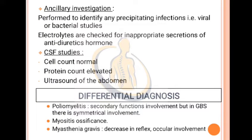Ancillary investigations are performed to identify any precipitating infections via viral or bacterial studies. Electrolytes are checked for inappropriate secretion of antidiuretic hormone. CSF studies show normal cell count and elevated protein count. Ultrasound of the abdomen is also done. Differential diagnosis is also considered.